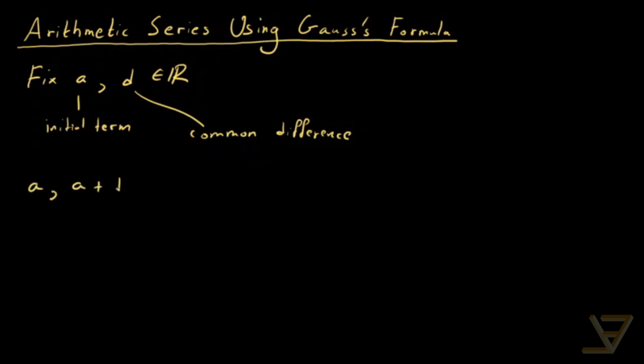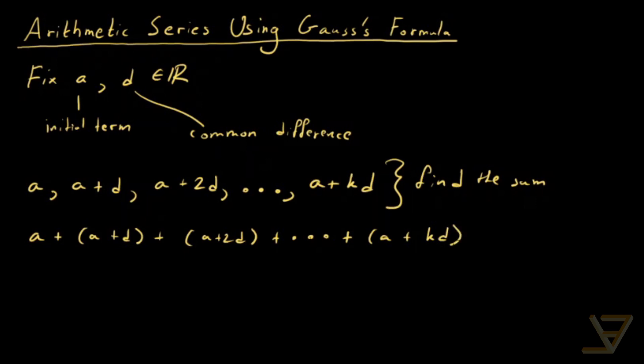And what the terms look like are like this: A, A plus D, so we skip ahead by D, then A plus 2D, and we keep going until we have A plus KD. And what we want to do is find the sum of all these terms. So it'll look like A plus A plus D, plus A plus 2D, all the way through to A plus KD.